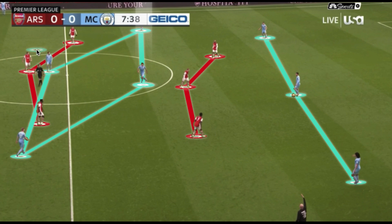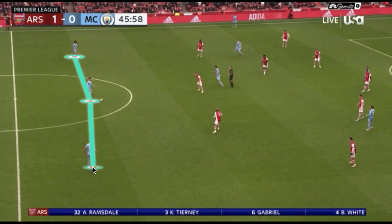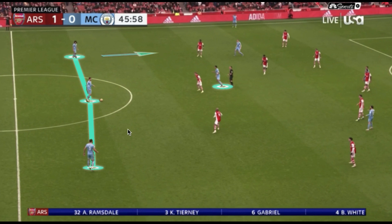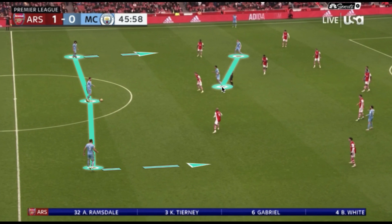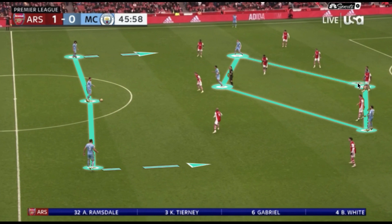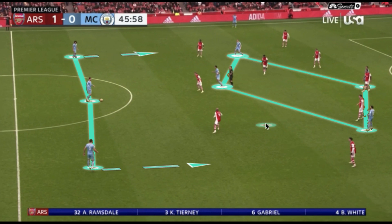Going forward against Arsenal's low block, Manchester City used a three-man back line with Rodri as the single pivot, allowing central defenders to dribble through the half-space to pull out Arsenal defenders and create a diamond for their rest defense. Laporte is at the base of this shape, with Kevin De Bruyne playing on the left-hand side — a bit different from his usual right-sided position. Bernardo Silva and Gabriel Jesus play more centrally, with Mahrez on the wing. We also have Raheem Sterling on the left-hand side, giving Manchester City a very distinct shape against Arsenal's low block.